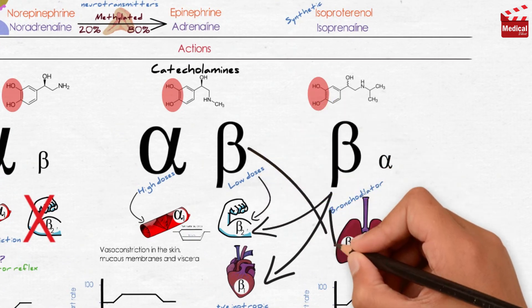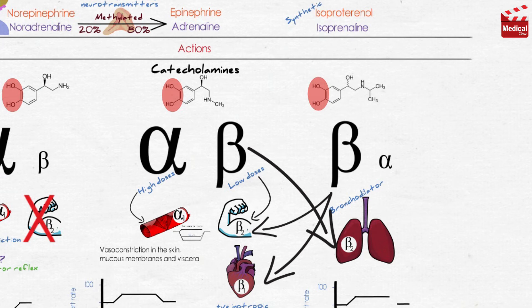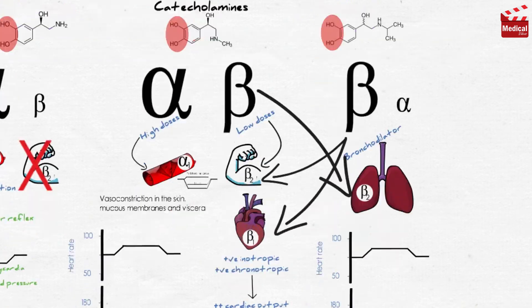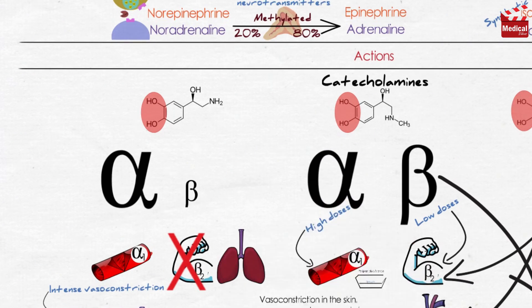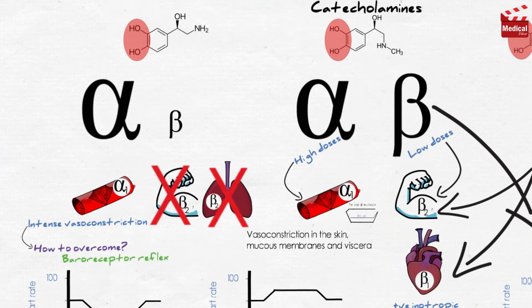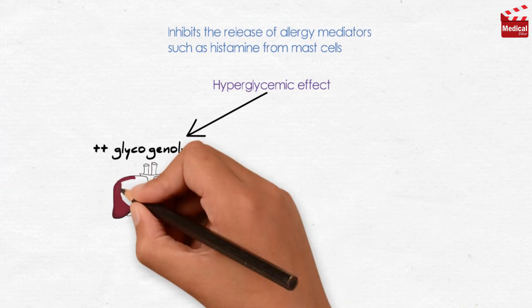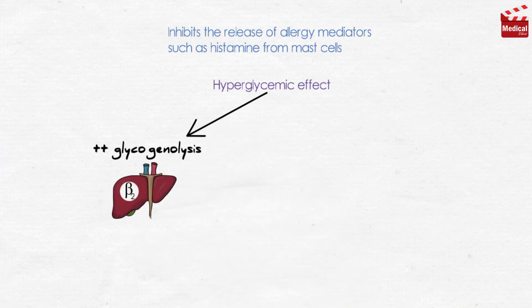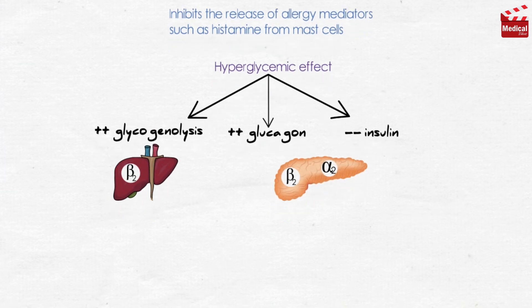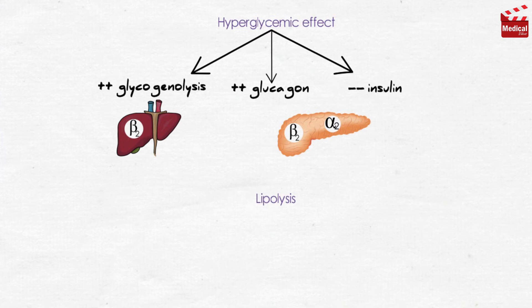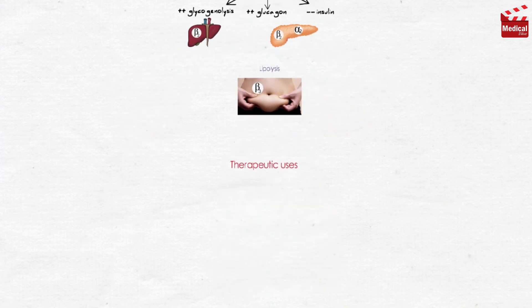Isoproterenol is a potent bronchodilator, acting directly on bronchial smooth muscle beta-2 receptors. Epinephrine is also a powerful bronchodilator by acting on beta-2 receptors in the lungs. It also inhibits the release of allergy mediators such as histamine from mast cells. Norepinephrine has very weak beta-2 activity, so it almost has no effect as a bronchodilator. Epinephrine has a significant hyperglycemic effect, as it increases glycogenolysis in the liver by acting on beta-2 receptors, increases the release of glucagon by acting on beta-2 receptors, and decreases the release of insulin by acting on alpha-2 receptors. Epinephrine also initiates lipolysis by acting on beta receptors of adipose tissue.